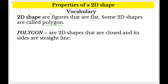Polygons are 2D shapes that are closed and their sides are straight lines. So remember, polygons are also 2D shapes, but they are closed and each side is a straight line. They have angles or corners.